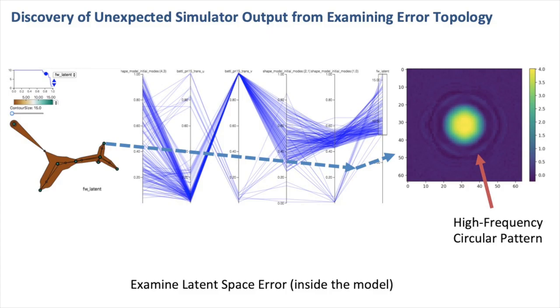In addition, the analysis of the model's latent space error reveals unexpected similar outputs, where high-frequency circular patterns exist around the main structure. According to domain scientists, those patterns may indicate potential problems of the simulator that they were not aware of before.